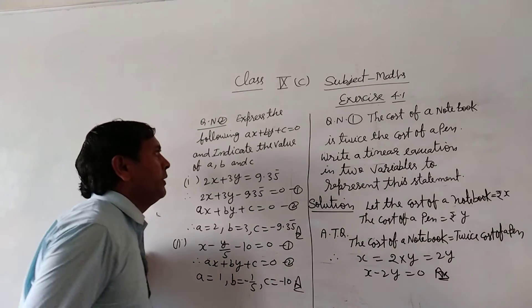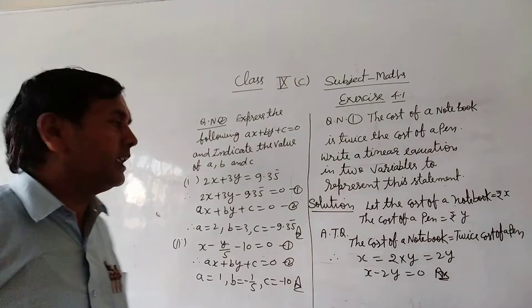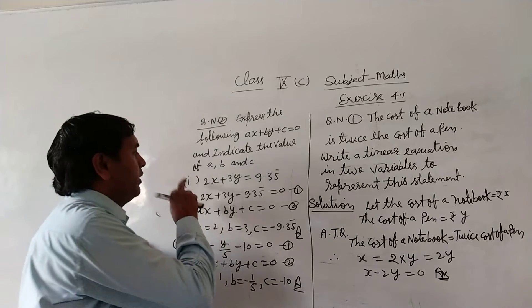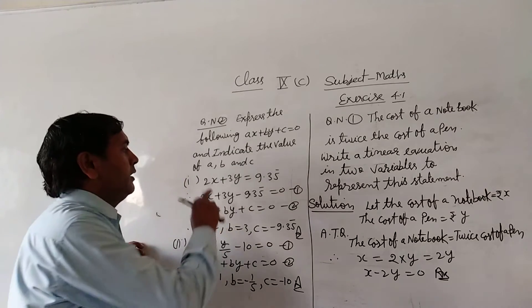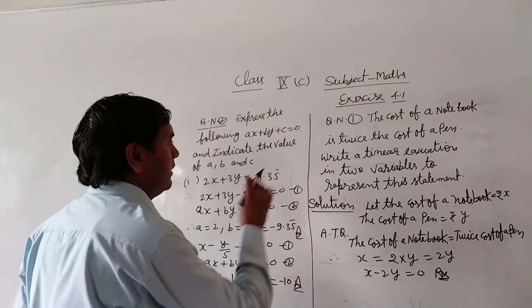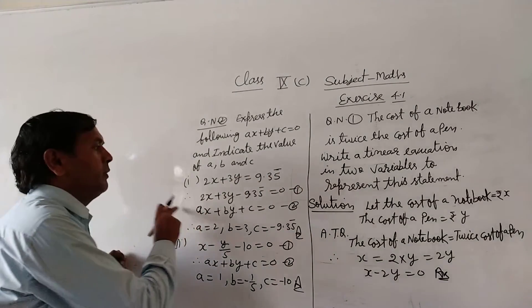Second, express the following as ax plus by plus c is equal to 0 and indicate the value of a, b, and c. Given first part: 2x plus 3y is equal to 9.35 rupees.